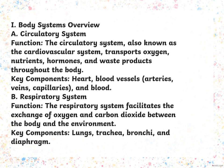Body systems overview. We will start with the circulatory system. The circulatory system, also known as the cardiovascular system, functions to transport oxygen, nutrients, hormones, and waste products throughout the body. The key components are the heart, blood vessels which are arteries, veins, and capillaries, and blood.